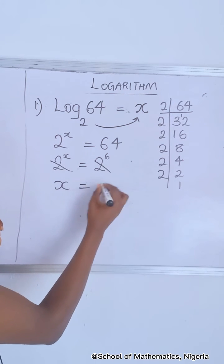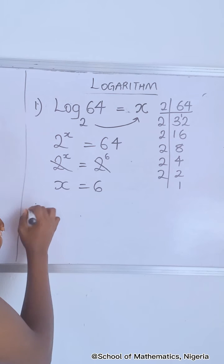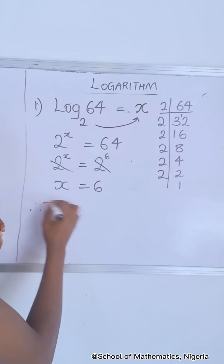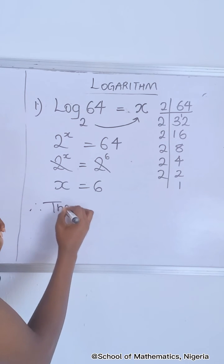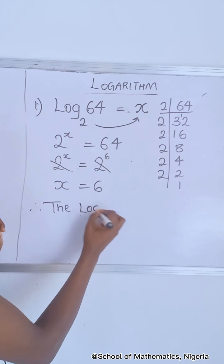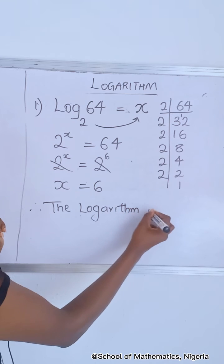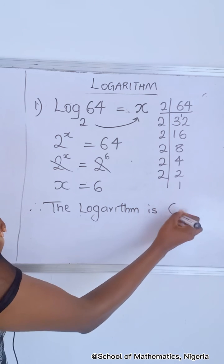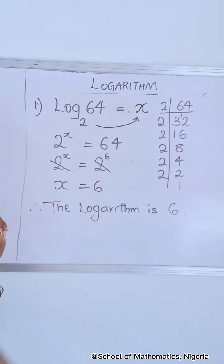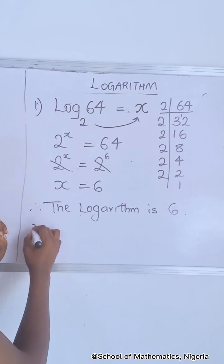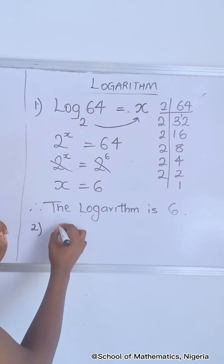You can see your bases cancel and you're left with the exponents. So therefore your answer — the logarithm — is 6. I hope you got it, so let me give you a question.